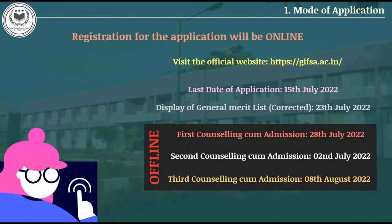Modes of Application: The registration for the admission procedure will be in the form online. You will have to visit the official website of the Government Institute of Forensic Science, which is mentioned in the description box. The last date of application is 15 July 2022. Do register before the last date. On 23 July 2022, they will display the correct general merit list for the further process. Then the Counseling cum Admission process will start, which will be offline.